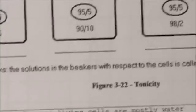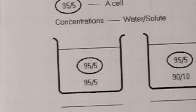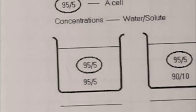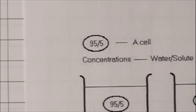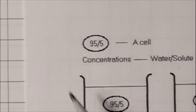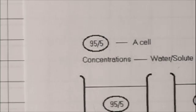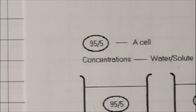Here we have three beakers, and in each beaker is a cell. This is the cell in the solution. For convenience, I've described the cell as having a concentration of water and a concentration of solute, and I diagram it like a fraction. So for example, the cell is 95% water and 5% solute. Just a convenient way to express water and solute concentration.